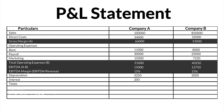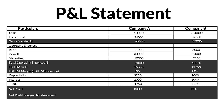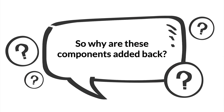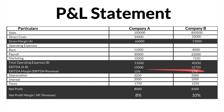To derive the net profit of each company, we subtract the components of depreciation, interest and taxes and then proceed to determine the net profit margins. As it is clear from the example, the earning capacities of both the companies were at the same level — the EBITDA margins for both companies stood at 15% each — but on subtracting the depreciation, interest and taxes, there is a change seen in the net profit margins.